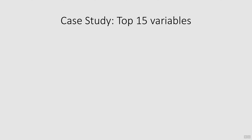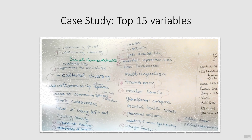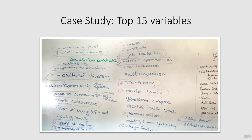The participants were given about 15 minutes to generate their individual lists. After that time, we went around the room and each person shared a variable, which was then written on the whiteboard. We then discussed each variable, determined which were most important, ranked them, and identified the top 15 variables. The final results are shown in this picture. These top 15 variables were carried over to the next activity, creating connection circles.